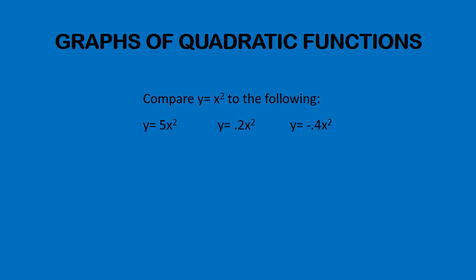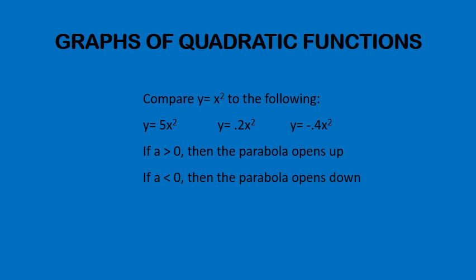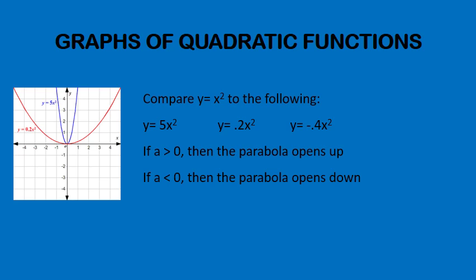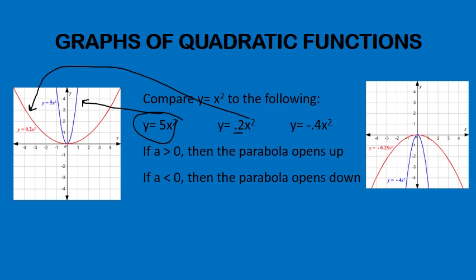So let's look at a few graphs here. We've got a few that are going to open up and a few that are going to open down. Over here, we've got these two graphs. You can see that because there's a positive value in front of the x squared term, we've got parabolas that open up. And over here, we've got a negative value in front of our x squared term. So we're going to have a parabola that opens down.